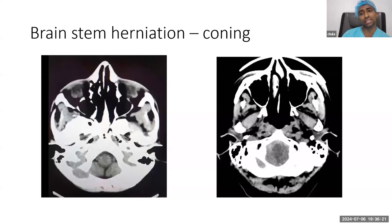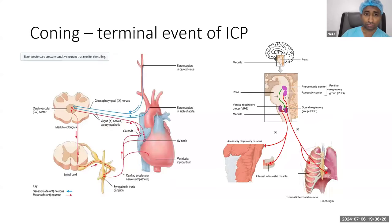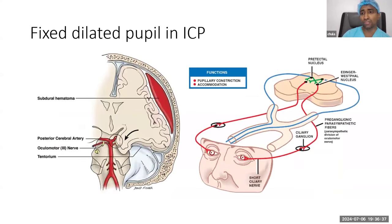This illustrates how cardiorespiratory abnormalities and fixed dilated pupils arise when coning occurs — the medulla, which contains the cardiorespiratory centers and the origin of vagal parasympathetic output, is compressed and ischemic.